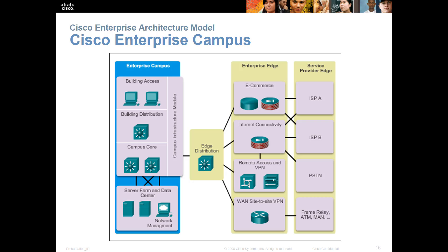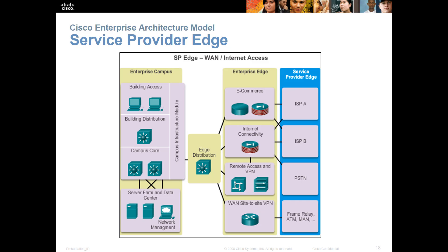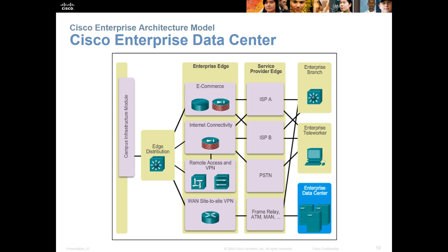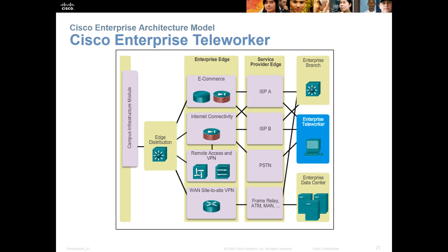The enterprise campus has access, distribution, and core. The core connects to things like the server farm and other distribution access layers. There may be an edge before it goes to the enterprise edge. The enterprise edge could be our WAN, our DMZ — security-type appliances that serve as the connection point to the service provider's edge. That's going to be managed by the service provider — our internet connection. After that, we may have an enterprise data center, which could be part of the server farm or a dedicated off-location data center. We could also have remote locations — remote branches or remote workers, like telecommuters.